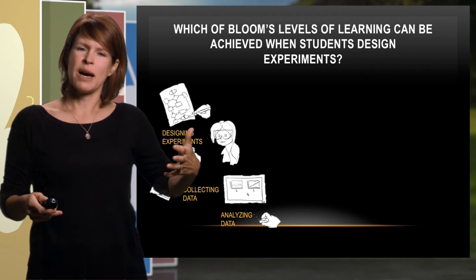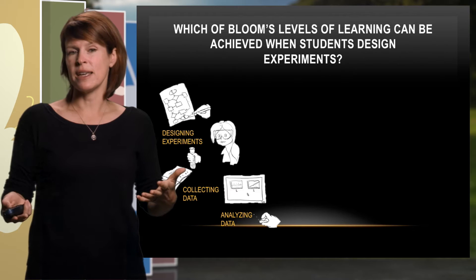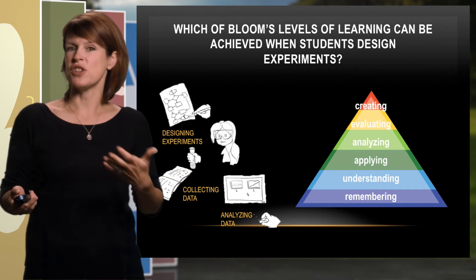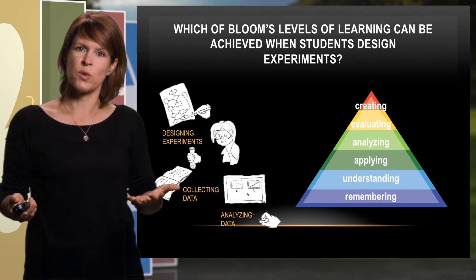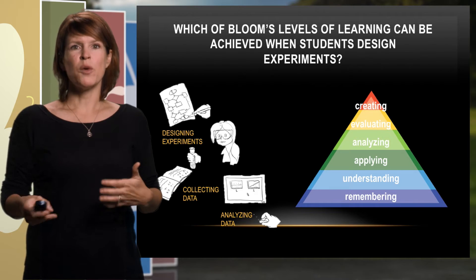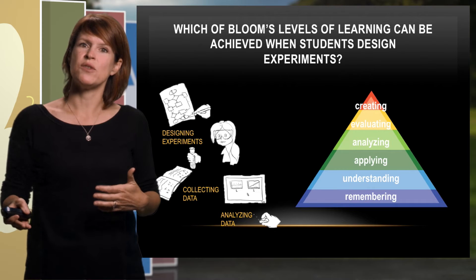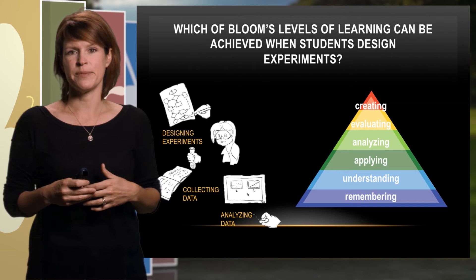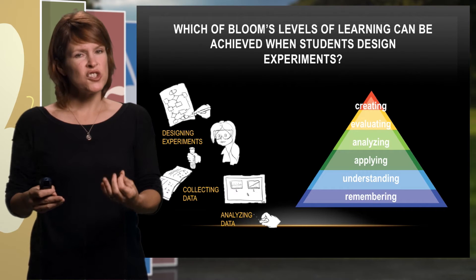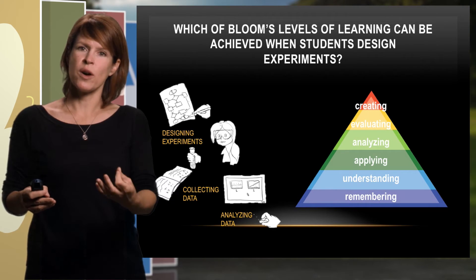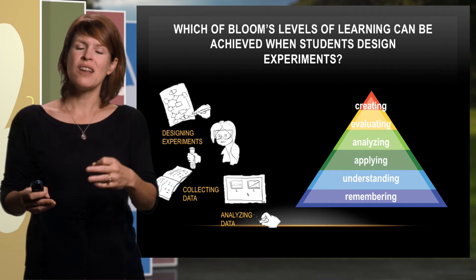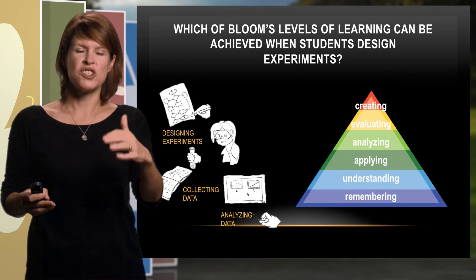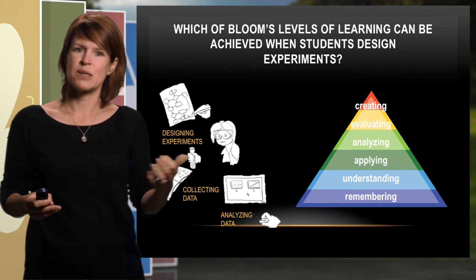One way to think about the types of thinking we're asking students to do is to use Bloom's taxonomy, which you've seen earlier in this course. So let's think about which of Bloom's levels of learning can be achieved when students design experiments, collect and analyze data. This is a choose-all-that-apply question, so stop and think about it before going on with the video.